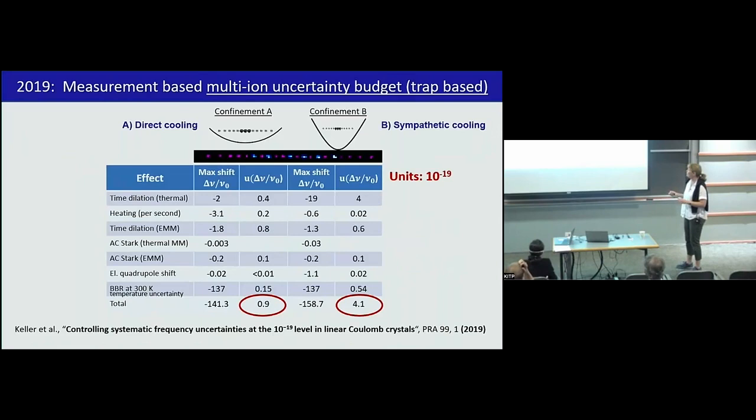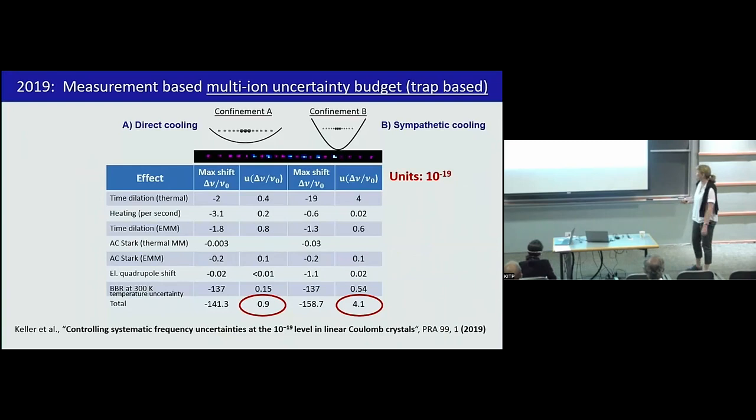Wrapping up all these measurements that we had collected over many years, we then published our first estimated error budget of such a multi-ion clock. We could show that all the systematic shifts are really in the low 10 to minus 19 level. If you do the direct cooling on indium, what we're up to do soon, we can probably even push it to the 10 to minus 20. But this is an estimated error budget. How do I know if my clock is correct? I have to measure against other clocks.